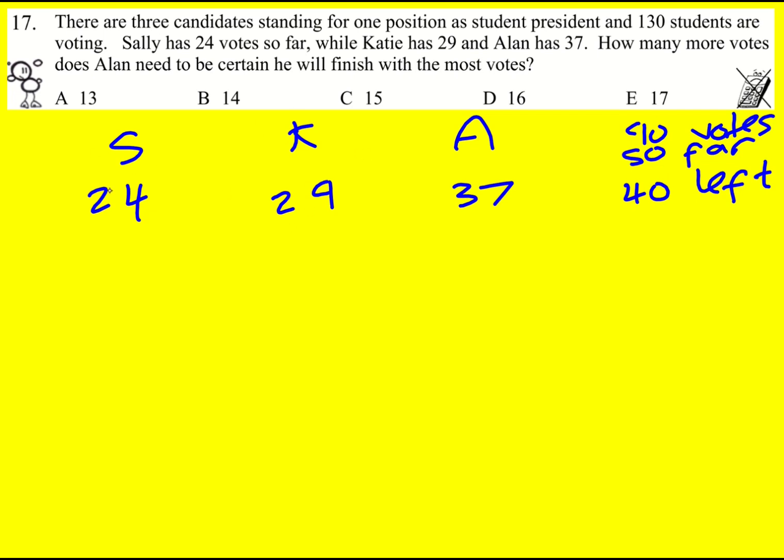If some of the votes now go to Sally then that's great because Alan's just going to remain. If the next five went to Sally then there's less votes to come and Alan will need less of them. So we've got to imagine that the votes are going to Katie as the nearest challenger.